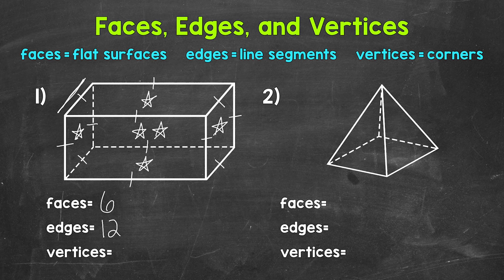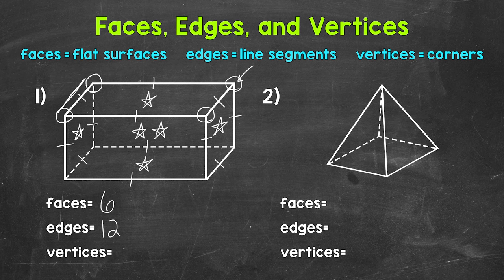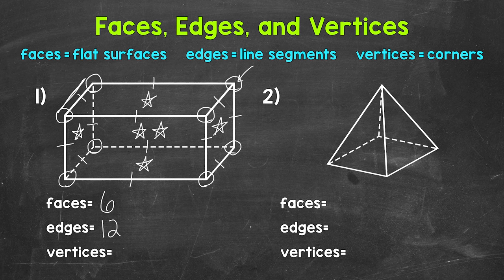And then lastly, let's identify and count the number of vertices. Those are the corners or points created by three or more edges meeting. For example, this is a vertex right here. This is one of the vertices. So let's start here and work our way around. So that's 1, 2, 3, 4, 5, 6, 7, 8. So 8 total vertices.